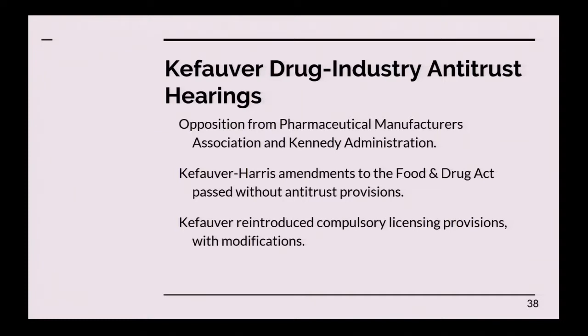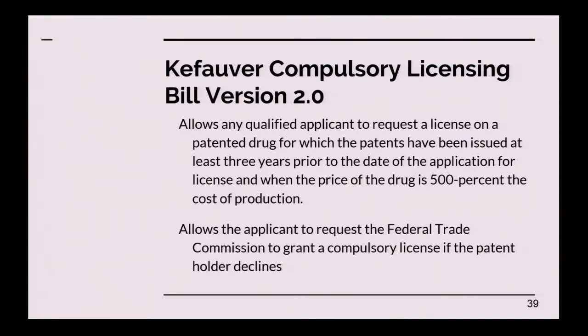The amendments Kefauver made to his bill following the hearings allowed any qualified applicant to request a license on a patented drug for which patents had been issued at least three years prior to the application and when the price of the drug was 500% — five times the cost of production — which included the cost of manufacturing the drug, research costs, revenues that go back into research at the company, and a few other factors. It would have allowed the applicant to request the FTC to grant a compulsory license, which differed from his initial proposal.